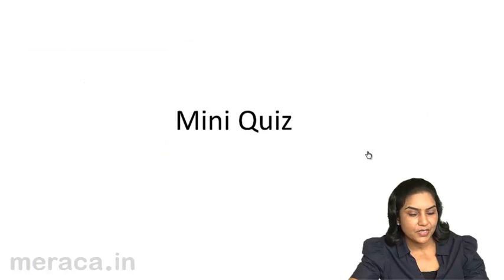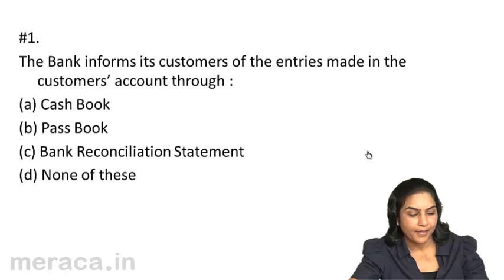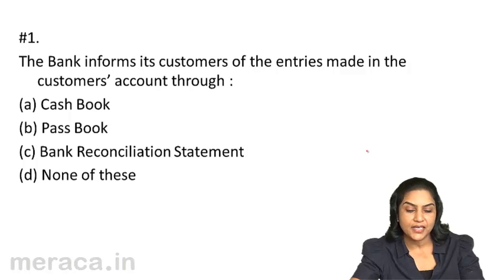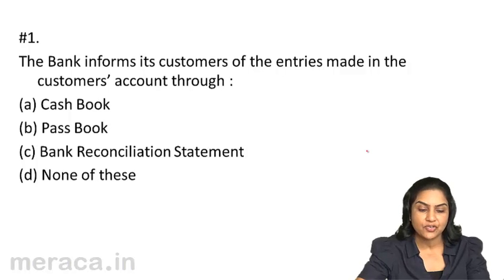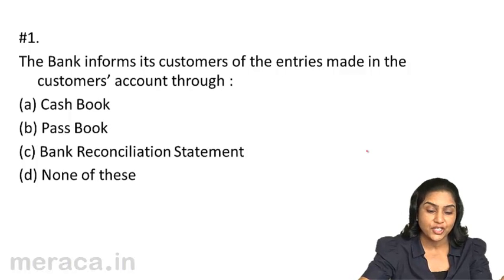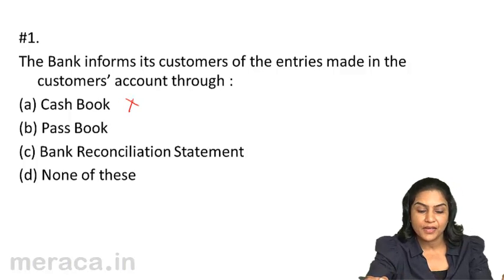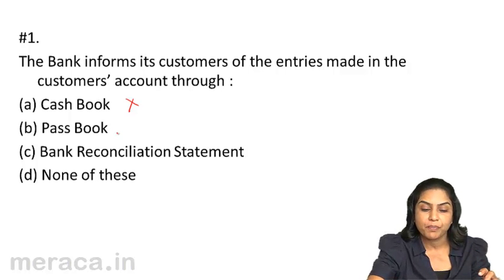Let us take another shot at this to test our understanding. The bank informs its customers of the entries made in the customer's account through — the cash book is not prepared by the bank. The pass book is nothing but a copy of the customer's account with the bank. This appears to be correct.